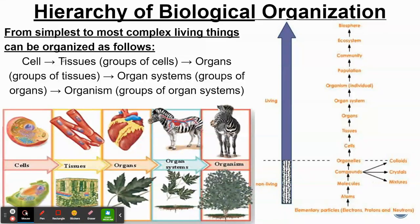The first living part really starts as a cell. We are leaving chemistry — chemistry was atoms, molecules, compounds, protons, electrons, neutrons — all non-living stuff. Cells are living, and they're made up of all those things, but everything before the cell is not considered living. You're only living once you've actually become that cell.